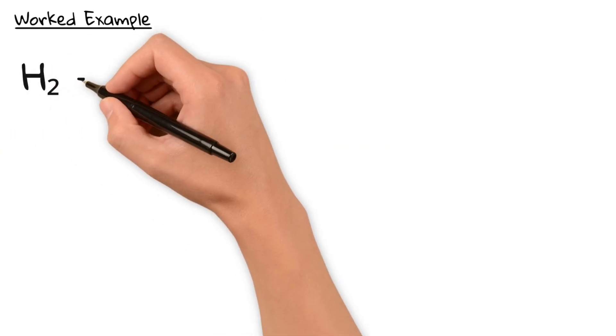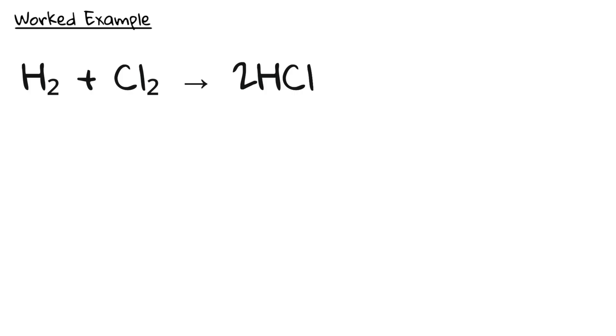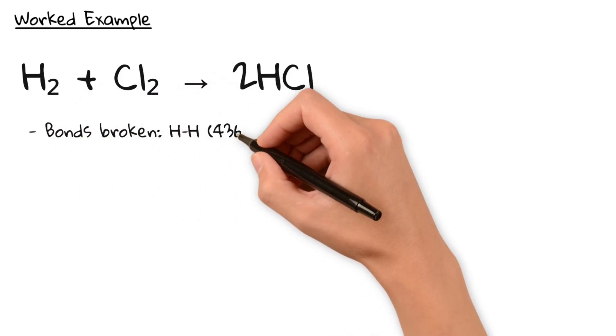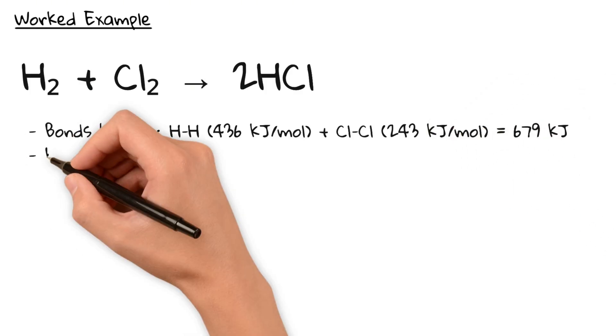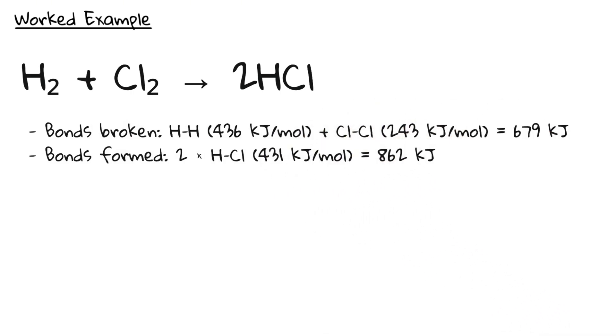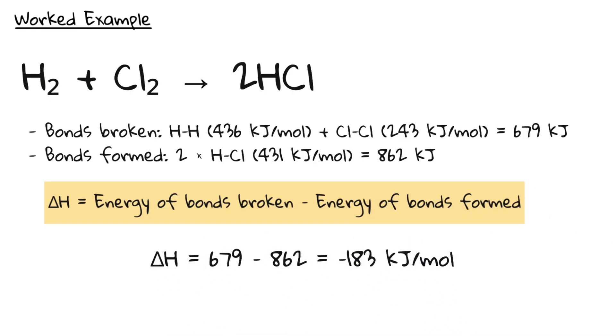Now let's take a look at this example. H2 + Cl2 → 2HCl. The total amount of energy required to break both bonds is 679 kJ. The energy released when two HCl molecules form is 862 kJ. To calculate the energy change, we simply subtract the energy of the products from the energy of the reactants. As you can see, delta H is negative 183 kJ. Therefore, the reaction is exothermic.